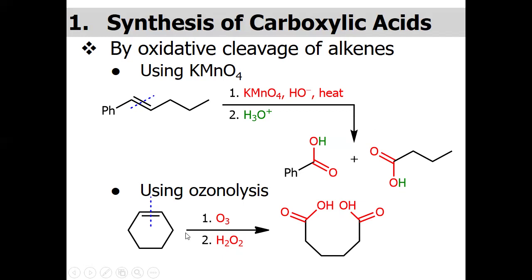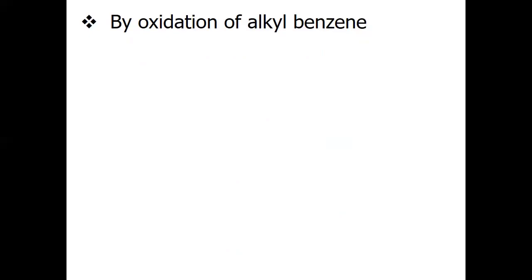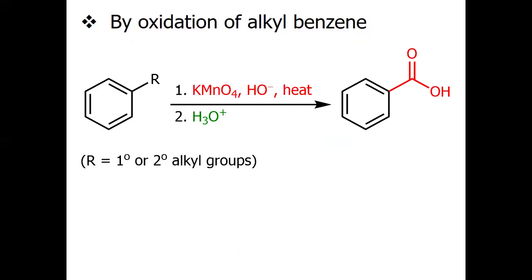This mechanism has also been explained in the reactions of alkenes. Carboxylic acid can also be obtained by the oxidation of alkyl benzenes. If we have a primary or secondary alkyl group, upon oxidation with KMnO4 and on heating under basic conditions, and after acidic workup, we may obtain the carboxylic acid.